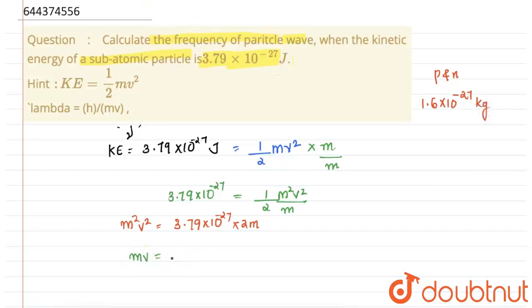So we can write this equation as mv = √(3.79 × 10^-27 × 2 × 1.6 × 10^-27 kg). This will be coming under the whole root.